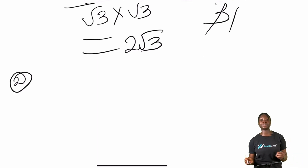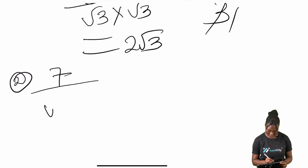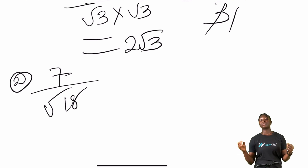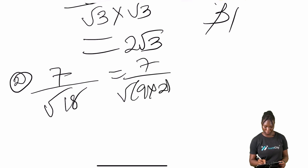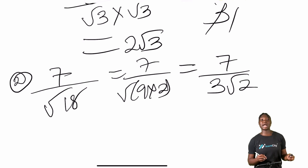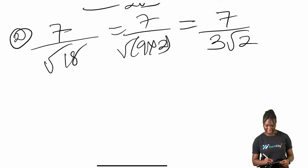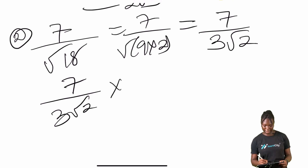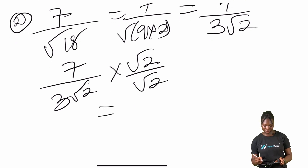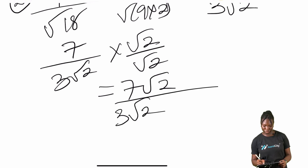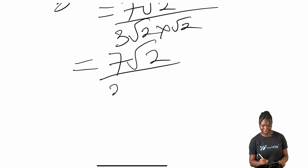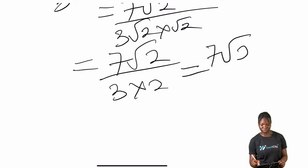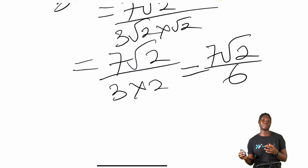Moving to the second example, we have seven divided by root 18. We can break root 18 down to root nine times two, which gives three root two. So we have seven over three root two. We multiply by root two over root two — the conjugate of the denominator — giving seven root two over three times two, which is seven over six. Our answer is seven over six.